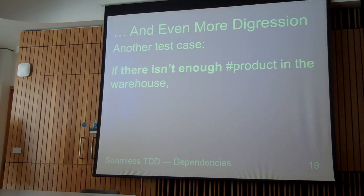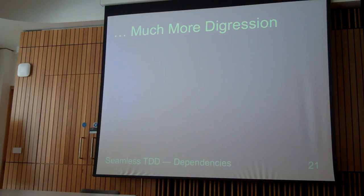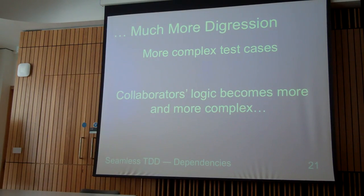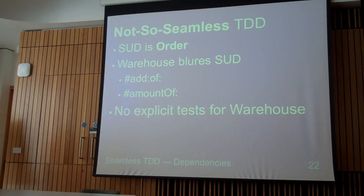There is another test case. It tells about what to do if there is not enough product in the warehouse — we do not fill the folder and we do not remove product from the warehouse. So, more complex test cases. We will have to write this method and make it more complex than it was, and we have to write some logic there. The operations will become more and more complex. This can suck us in. As a result, we have not so seamless activity as we would like to have, because all of them is glued together by wire.